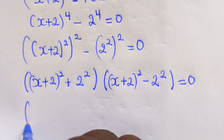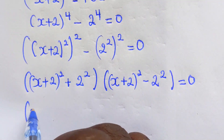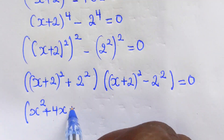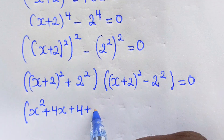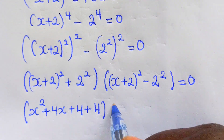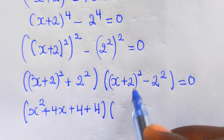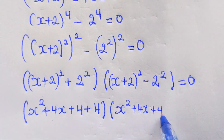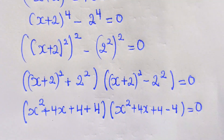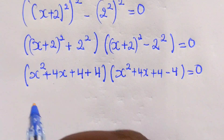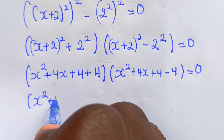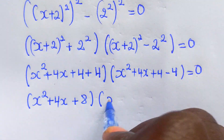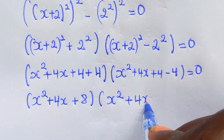At this stage we expand x plus 2 squared to get x squared plus 4x plus 4, then plus 2 squared which is 4 — giving x squared plus 4x plus 8. Then times x plus 2 squared, expanded as x squared plus 4x plus 4, minus 4, giving x squared plus 4x, equal to zero.